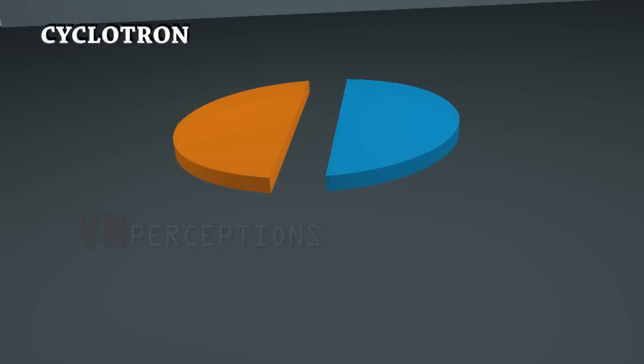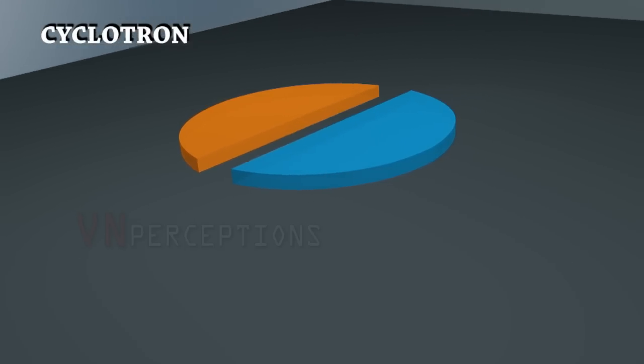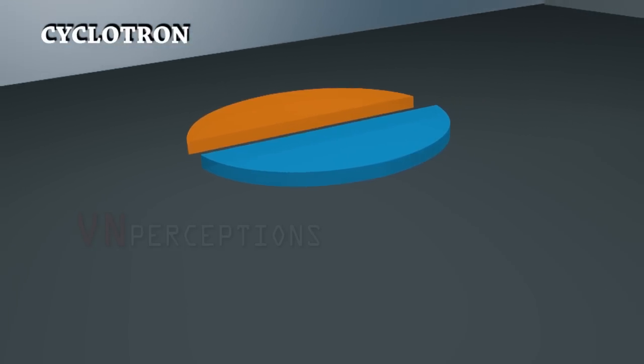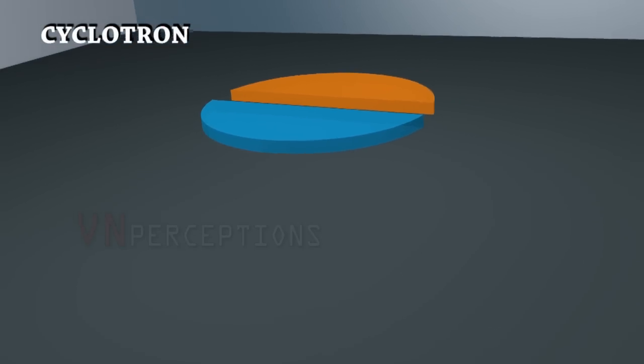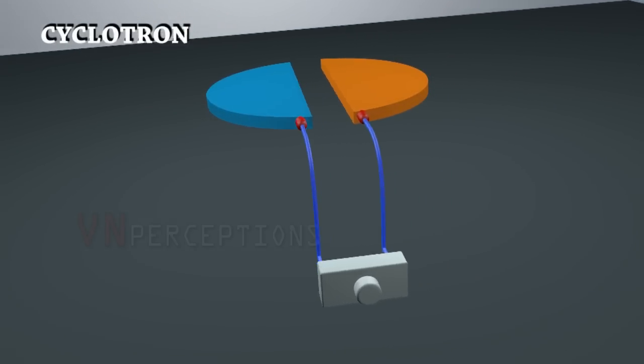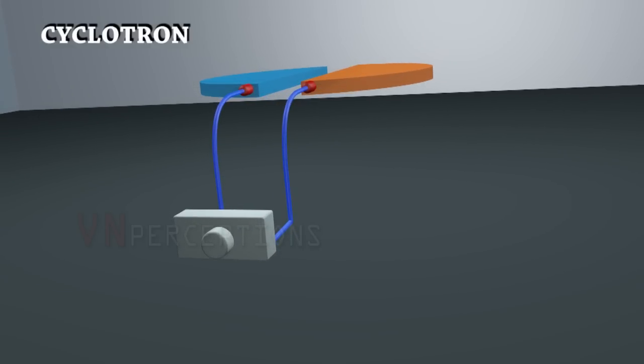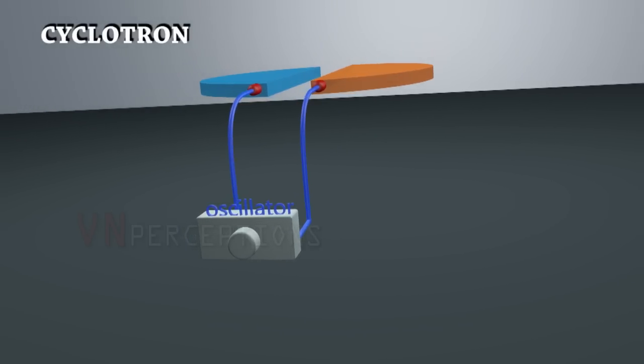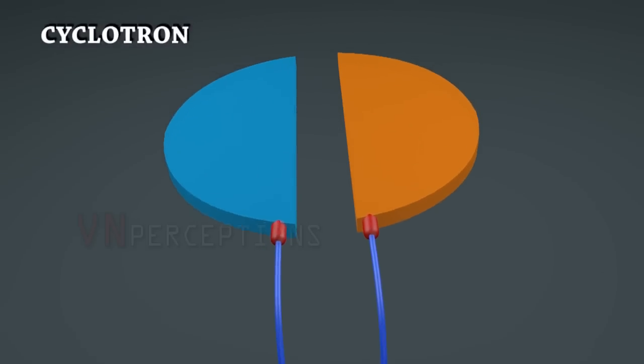Two hollow half cylinders made of high conductive metals known as D's are so placed that the straight edges face each other with a small gap between them. These two D's are connected to two terminals of an alternating voltage source, an oscillator. It would help in changing polarity.